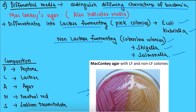The colorless portion is non-lactose fermenting, as seen in Shigella and Salmonella. The composition of MacConkey's agar can be remembered by the mnemonic PLANS: P for peptone, L for lactose, A for agar, N for neutral red, and S for sodium taurocholate.